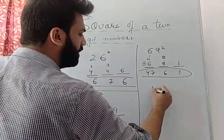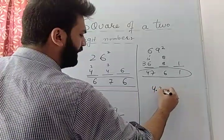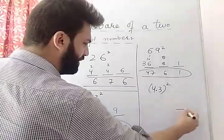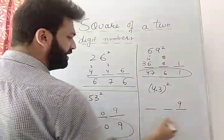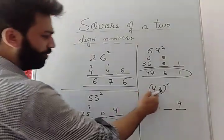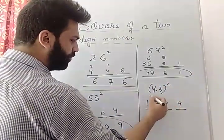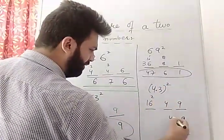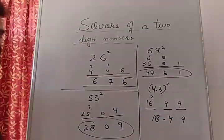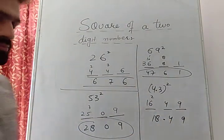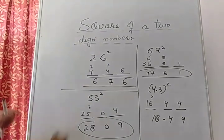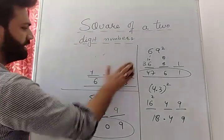Now for 4.3 squared — nothing special, just eliminate the decimal. Make 3 places. 3 squared is 9. 4 squared is 16. 4 into 3 is 12, into 2 is 24 — carry 4. Add them up to get 18.49. Keep the decimal after two digits.